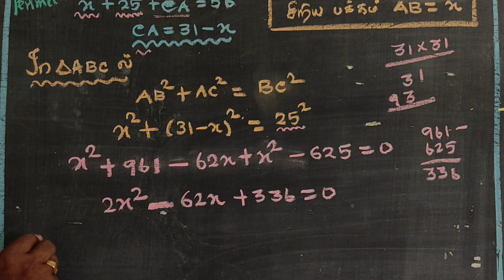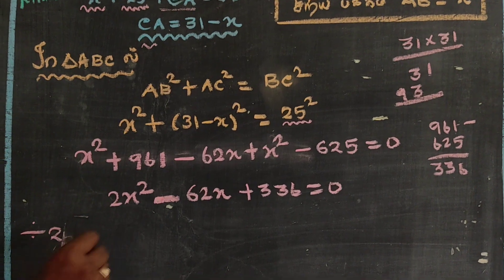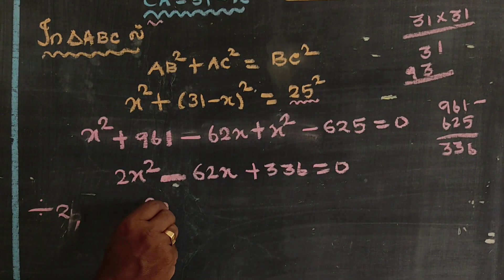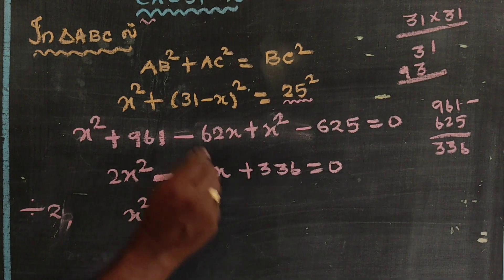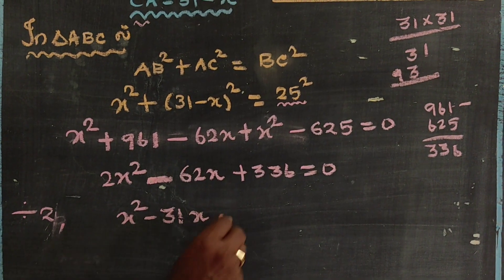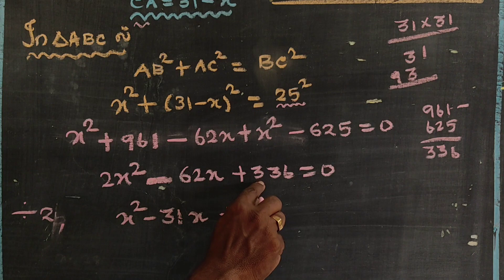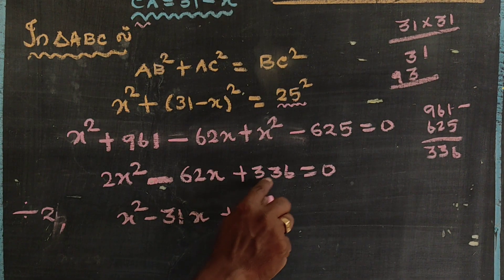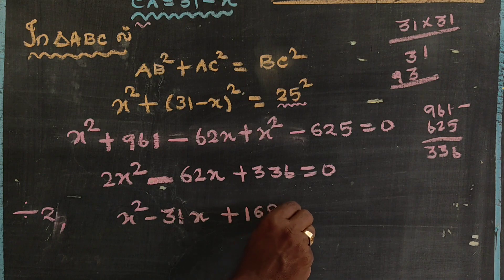Dividing everything by 2 gives x squared minus 31x plus 168 equals 0.